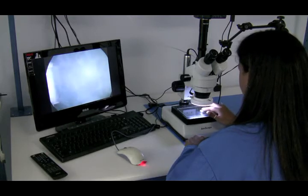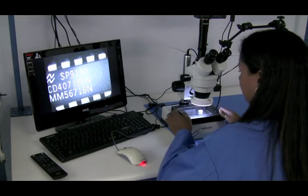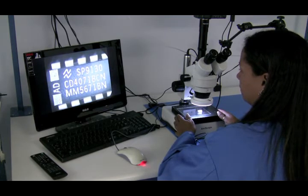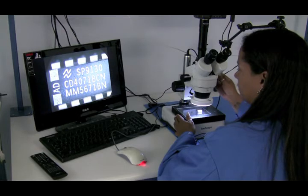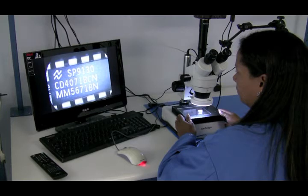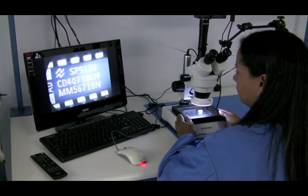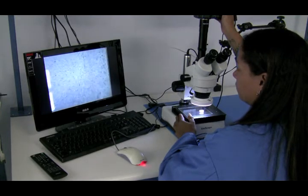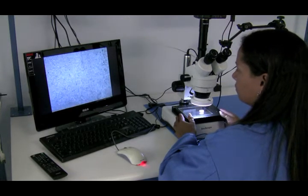First we'll place the unit on the stage of the scope and get a closer look on the 90x magnification of the part markings. We will then take a look at the body of the part where the surface test was performed and get a close up to see if there were any scratch marks revealed.